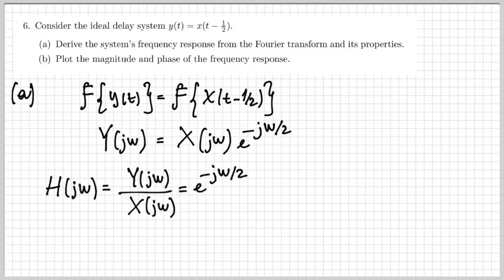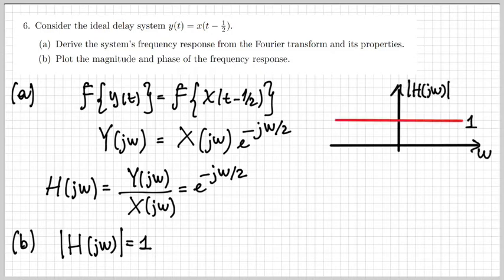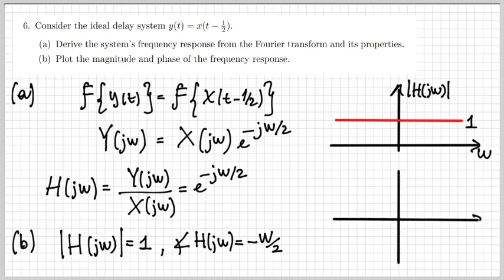The frequency response H(jω) is defined as the ratio between the Fourier transform of the output and the Fourier transform of the input, so it is readily obtained as e^{-jω/2}. In part b of the exercise, we should plot the magnitude and phase of this frequency response. The magnitude is simply one, and the phase is -ω/2, which is a linearly decreasing linear phase — so it just looks like a straight line going down.